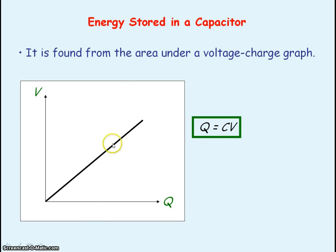To get the area under this graph, we would take the area of a triangle. And so that is a half base times height. So half of the base is our charge stored, Q, times our height, which is our voltage, V. So we can say the energy stored in a capacitor is equal to a half QV.